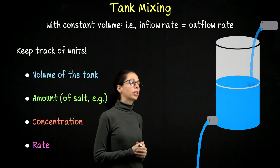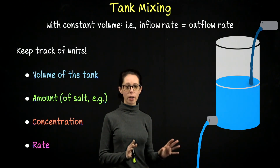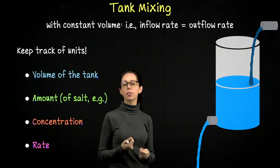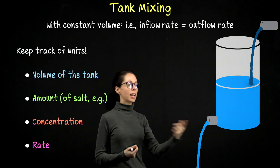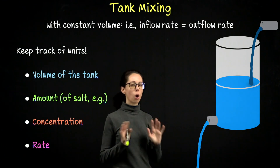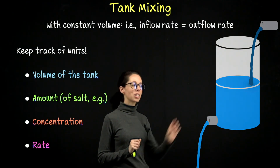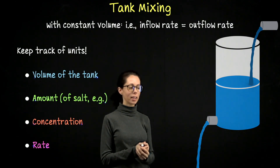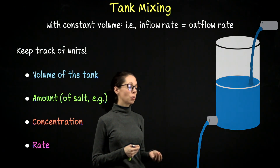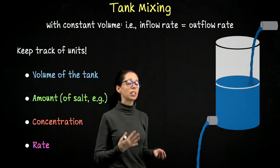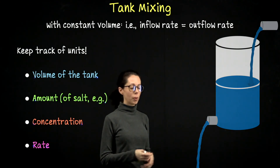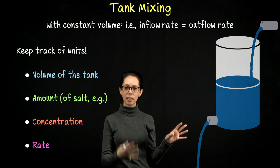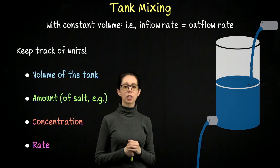For example, we could start with a tank that is pure water and the inflow pipe adds some kind of salty mixture. The tank is assumed to stir instantaneously — as soon as the salty water hits the tank, it's immediately dispersed throughout. Then we drain out what becomes an increasingly salty mixture. So you're starting with pure water and increasing its salinity by adding a salty mixture.